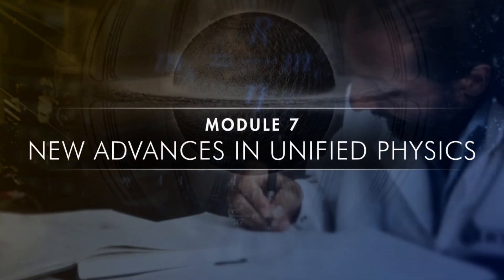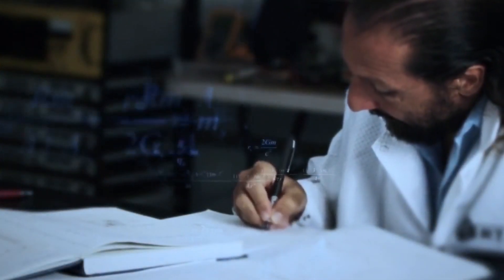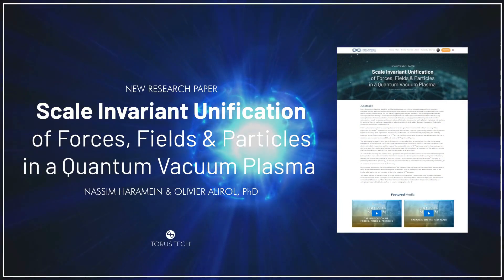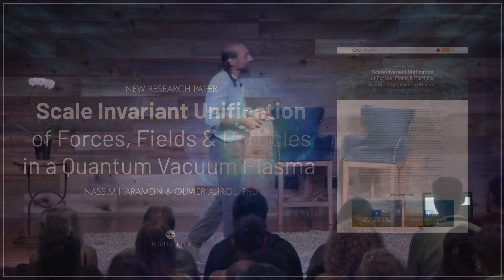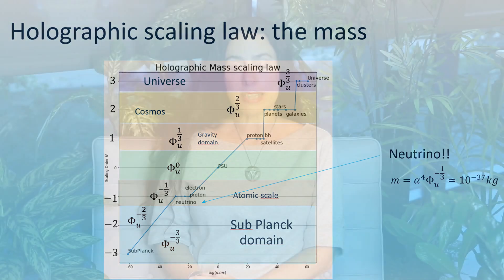Welcome to module 7. Read it carefully. It is also a training and preparation for what's coming next soon — module 8, the Universal Scaling Law — where we will see how the generalized holographic model and its surface-to-volume ratio can scale from the Planck scale and below, up to the universe and beyond. See you on the other side of the event horizon.